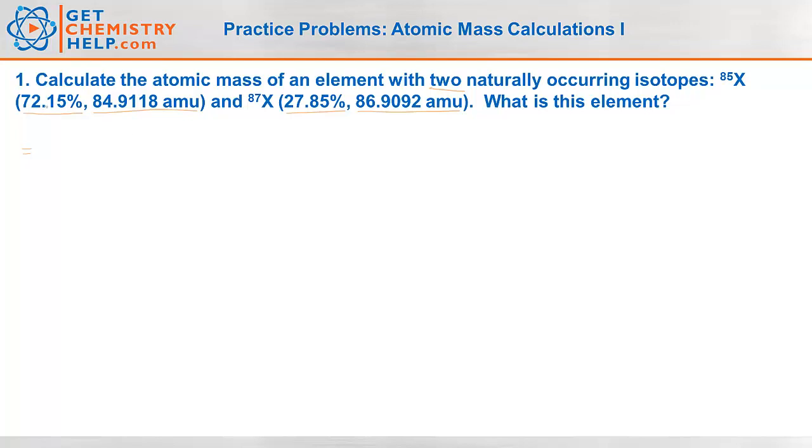So let's take the abundance of x85 times the mass of x85. Now the first thing to remember is whenever you use a percentage in a calculation, you have to convert it into decimal form. So when you make a percentage, you multiply by 100. When you turn a percentage back into a decimal, you divide by 100. So this decimal is going to move two places to the left.